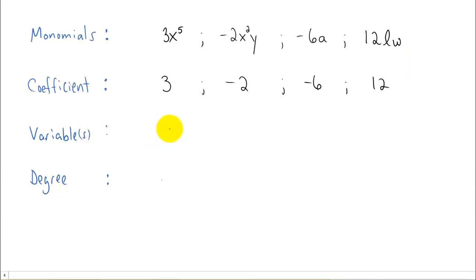Now let's look at the variables. The variable in our first monomial is x. We have two variables in our second monomial, x and y. We just have one variable in our third monomial, and it's a. And the two variables in our last monomial are l and w.